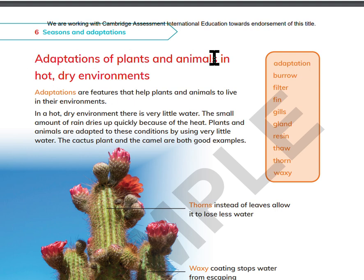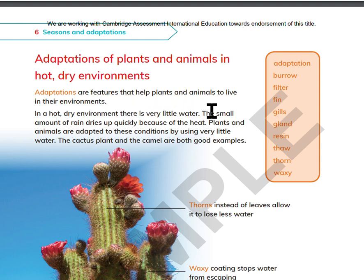Adaptations of Plants and Animals in Hot, Dry Environments. Adaptations are features that help plants and animals to live in their environment. In a hot, dry environment, there is very little water. The small amount of rain dries up quickly because of the heat. Plants and animals are adapted to these conditions by using very little water. The cactus plant and the camel are both good examples.